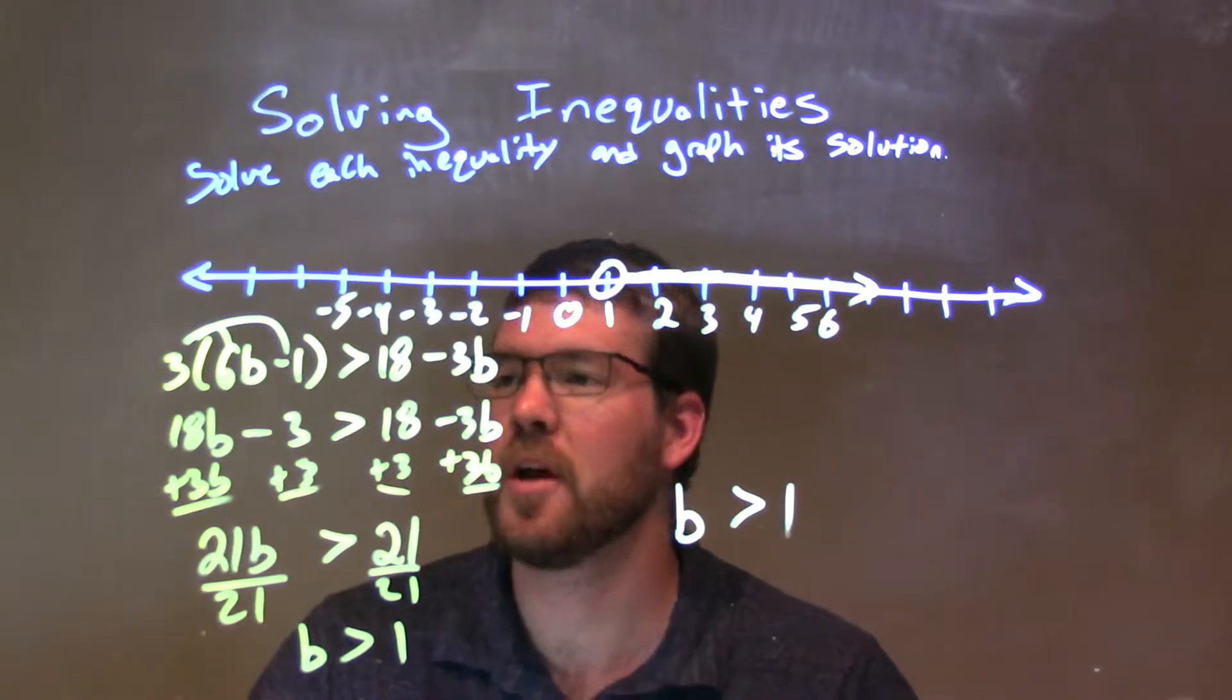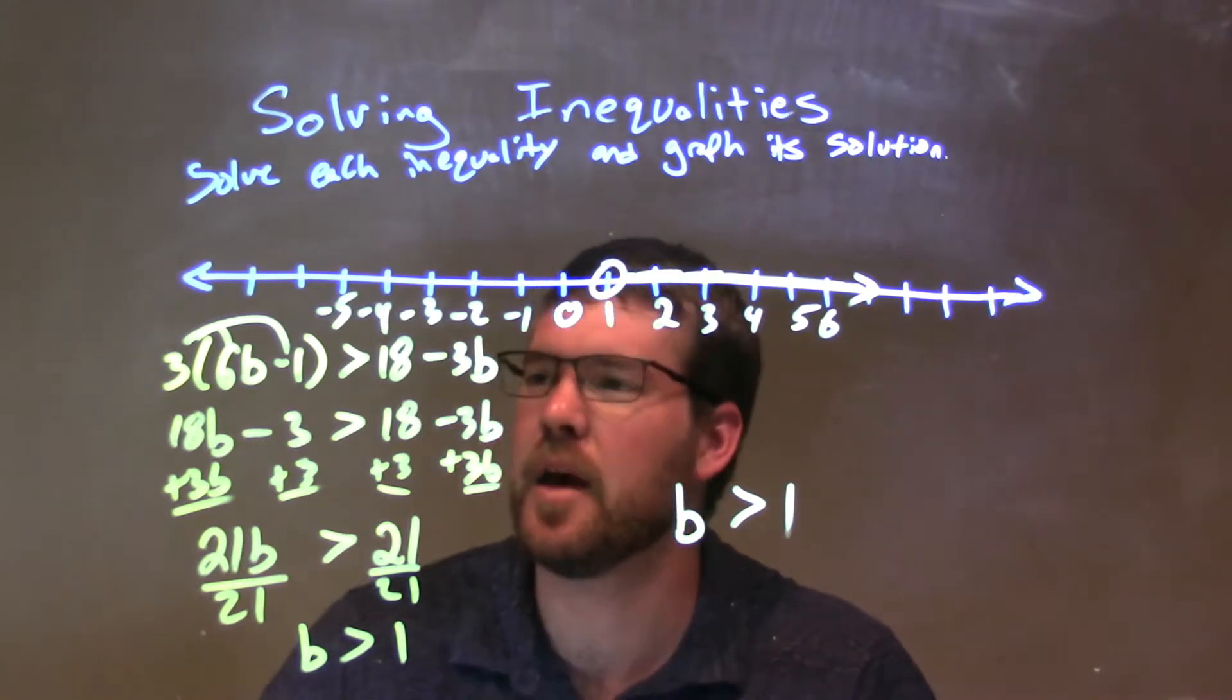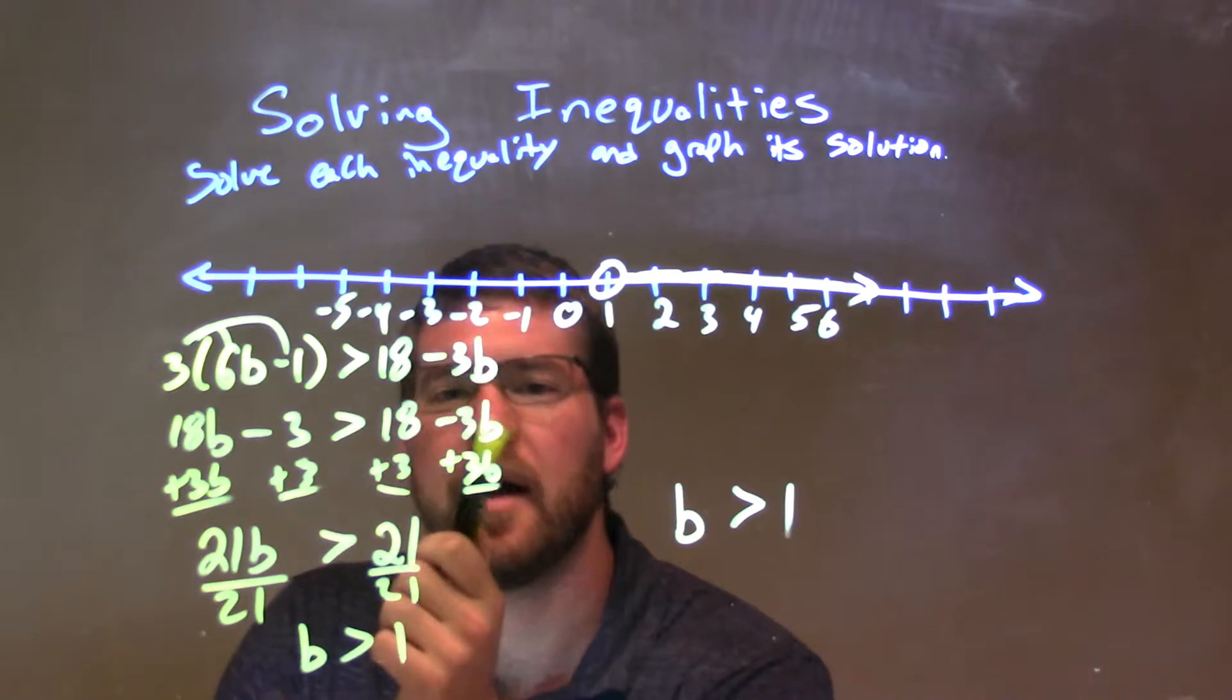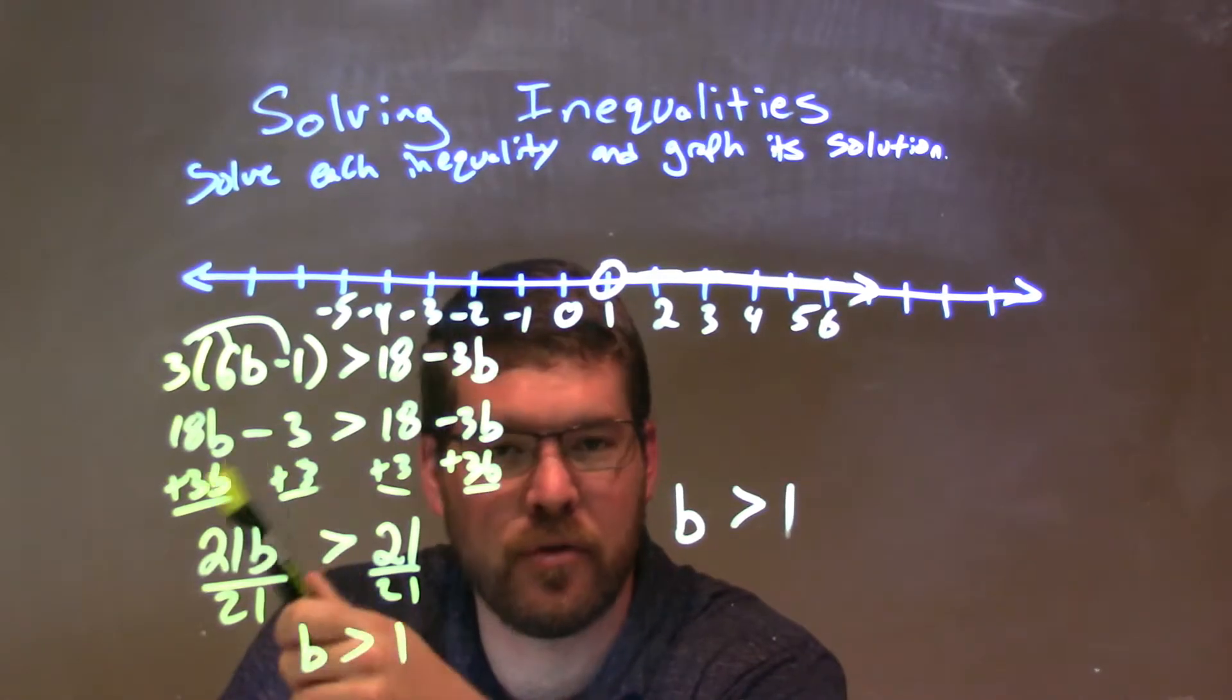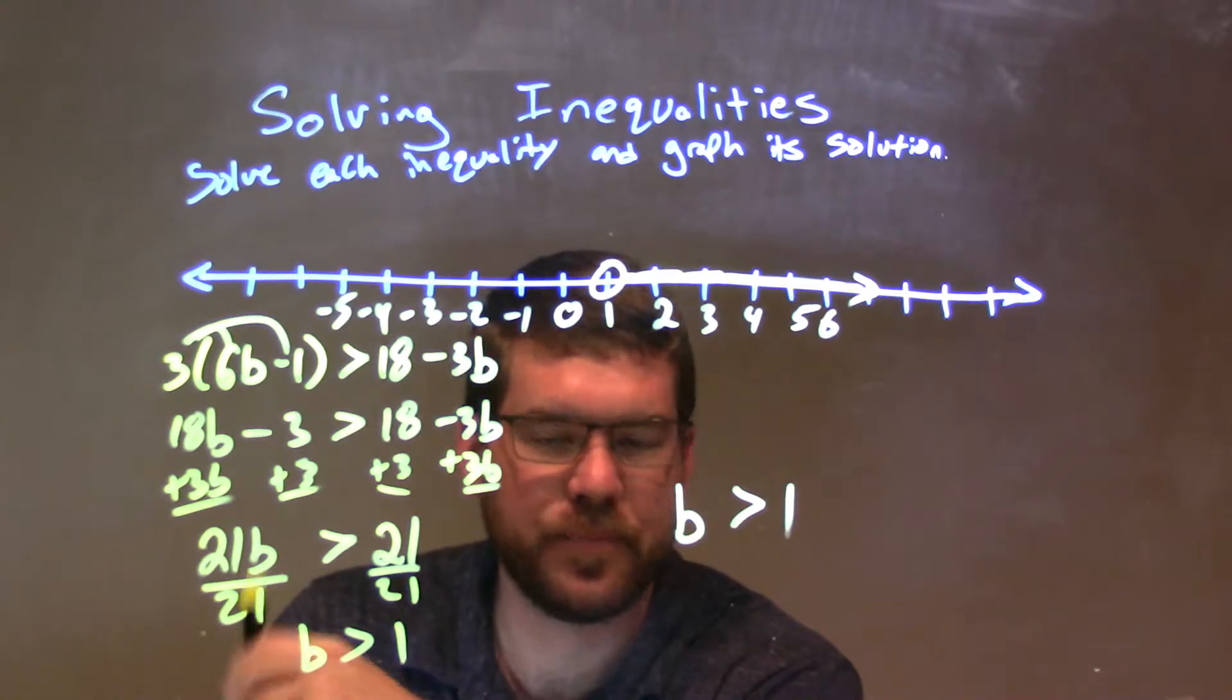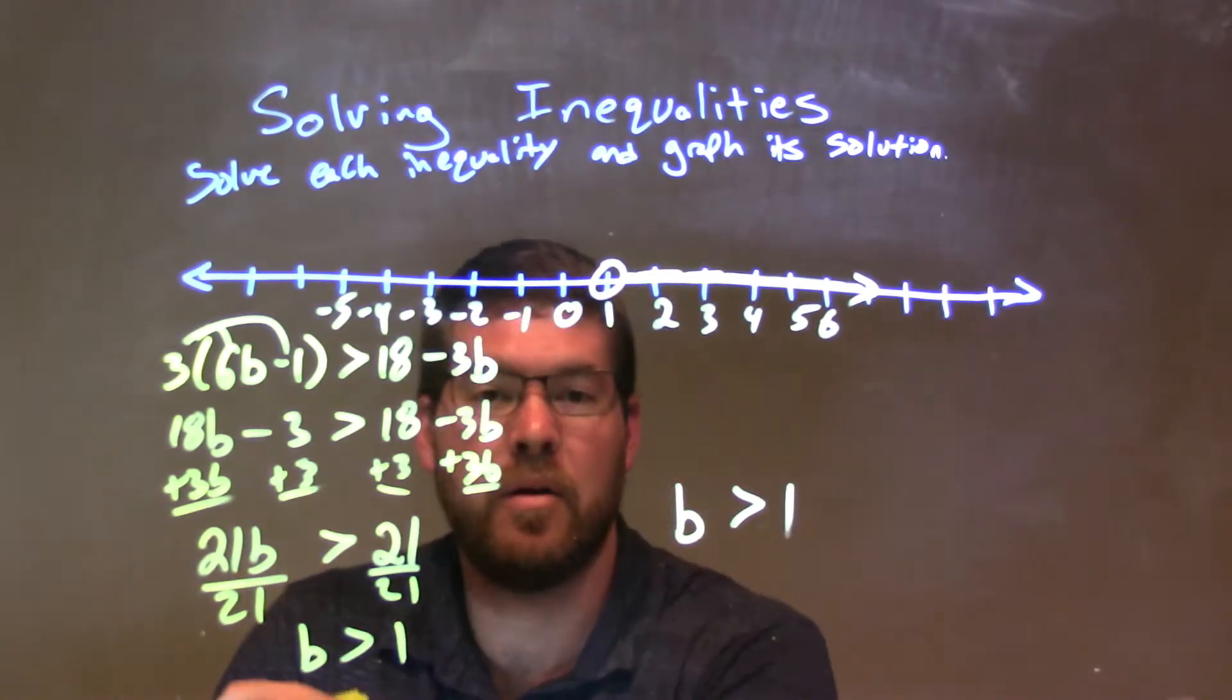So let's recap. We're given 3 times 6b minus 1, and it's greater than 18 minus 3b. I distributed 3 across to both parts. Then, at that point, I brought all my b's to the left, my numbers to the right. That's simplified to be 21b is greater than 21. Divided by 21 on both sides, and got b by itself to be greater than 1.